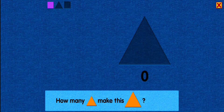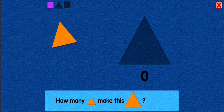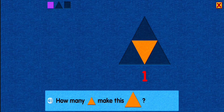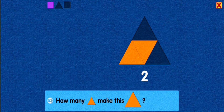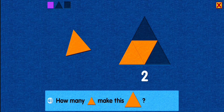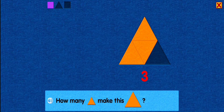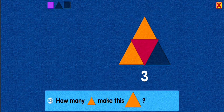How many triangles make this triangle? One! Two! Good job! You placed this triangle beside the center triangle. Three! Nice! You placed this triangle above the center triangle.